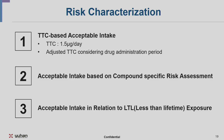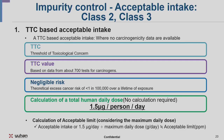The next step is risk characterization. Based on the hazard assessment, impurities are categorized into different classes — one, two, and three — with acceptable intake levels and principles to determine them. These include TTC-based acceptable intake of 1.5 micrograms per day, adjusted TTC considering drug administration period, compound-specific risk assessment, and acceptable intake in relation to LTL exposure. For TTC, carcinogenicity and other toxicity acceptable intake are set utilizing TTC.